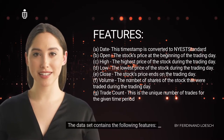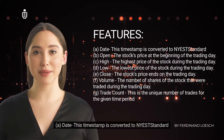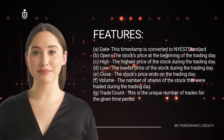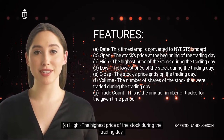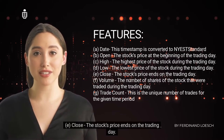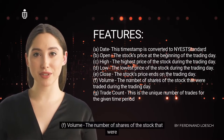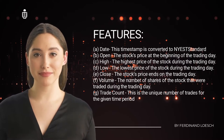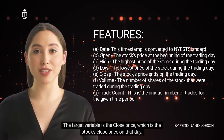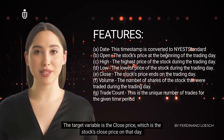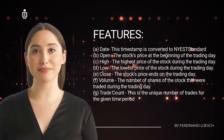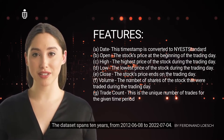The dataset contains the following features: date (timestamp converted to NAYA standard), open (stock price at beginning of trading day), high (highest price during the trading day), low (lowest price during the trading day), close (stock price at end of trading day), volume (number of shares traded), and trade count (unique number of trades for the given period). The target variable is the close price. The data is recorded daily, with each row representing a given trading day. The dataset spans 10 years from 2012-06-08 to 2022-07-04.